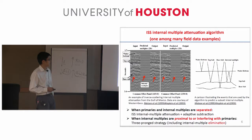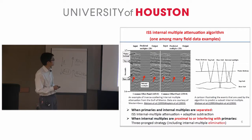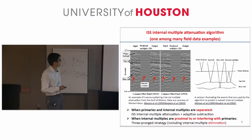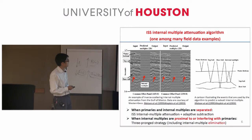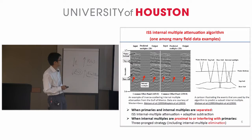Now when the internal multiples are proximal to or interfering with primaries, as in this field data example, the left part of the figure shows the input data, the middle part shows the predicted internal multiples, and the right part shows the data after internal multiple attenuation and adaptive subtraction. This is a historic and very impressive result, showing that the ISS internal multiple attenuation algorithm can predict all internal multiples with correct time and approximate amplitude.